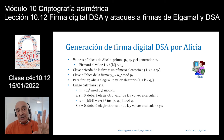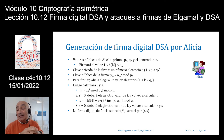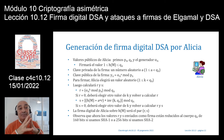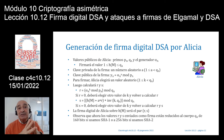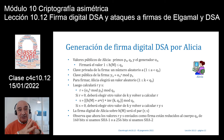La firma digital de Alicia es exactamente igual que en ElGamal: el par (R, S). Lo importante es que ahora los valores R y S están reducidos al cuerpo Q_A, no a P_A. Es decir, son dos valores de 160 bits con SHA1 —no dos valores de 1024 bits como en la firma de ElGamal—. Con SHA2 tendríamos valores de 256 bits, que sería lo típico en una firma actual, por ejemplo en Bitcoin.